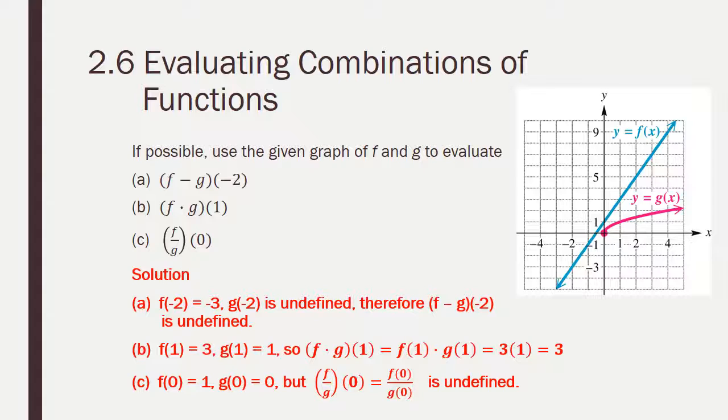For Part C, f of 0 is 1. However, g of 0 is 0, which means we have 1 over 0, which is undefined.